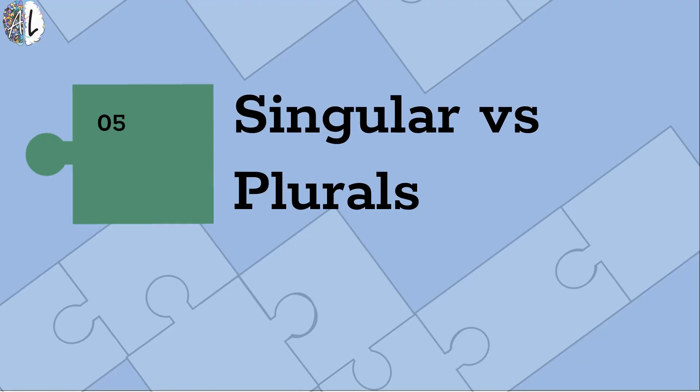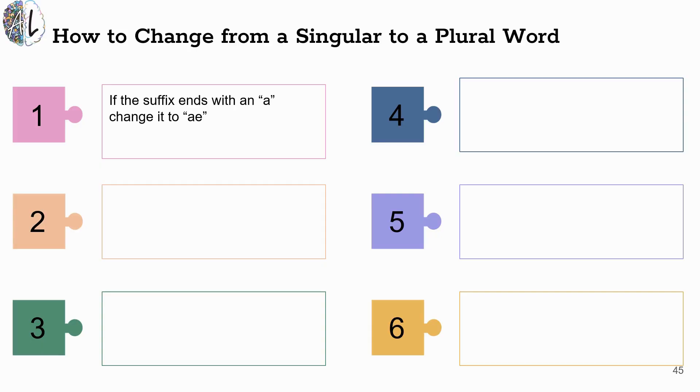Plural words, which are two or more items, have a number of spelling rules we are going to cover. If the suffix ends with the letter A, we are going to simply add an E and change the end to AE. So in this case, a scapula, which is your shoulder blade ending in just the A, is a single scapula. But scapulae with the AE is plural, meaning two, and you do have two of them.